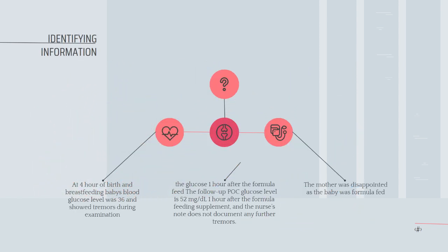To sum up, after four hours of birth, the baby was breastfed. However, the baby suffered from slight tremors and after examining the blood glucose level, the result was 36. The nurse gave the baby a formula feed, and after one hour, the nurse measured the blood glucose again. The glucose one hour after the formula feed, the follow-up POC glucose level is 52 milligrams per deciliter one hour after the formula feeding supplement, and the nurse's note does not document any further tremors.